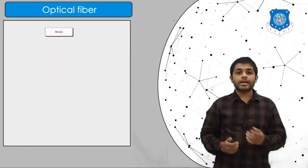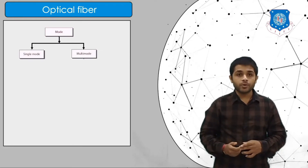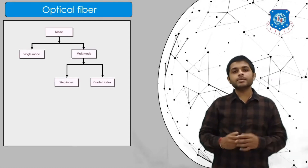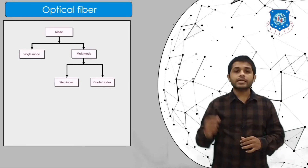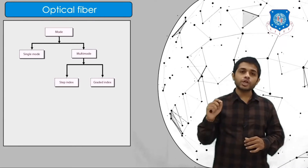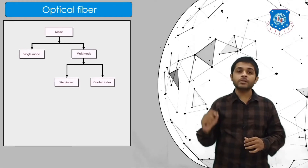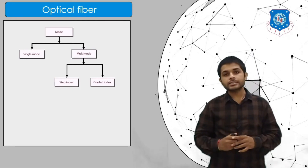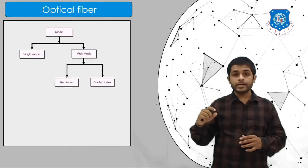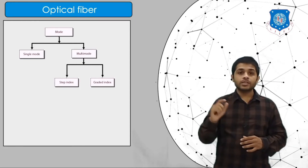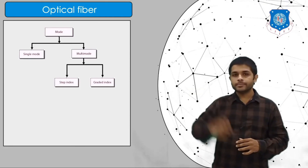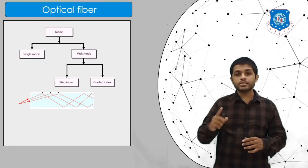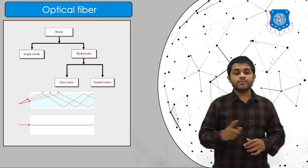There are two types of fiber modes: single mode and multi-mode. Multi-mode is further divided into step index and graded index. Single mode can propagate only one particular wavelength, while multi-mode can propagate more than one wavelength. In step index, the refractive index of the glass changes abruptly; in graded index, it changes gradually.